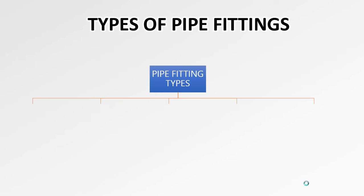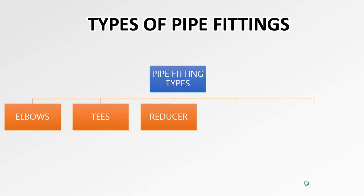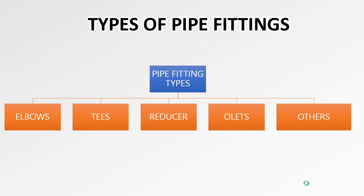Now let's see the types of pipe fittings generally used in piping design. One of the fittings is the elbow, which is a very important fitting that helps with change in direction of piping. The second one is the tee, which helps in taking branches. The third one is the reducer, which helps in reducing the line size. And then we have olets, which are also fittings used for taking branches from the line. The rest fall under other categories.